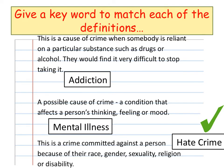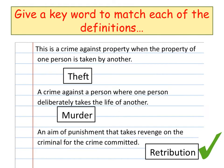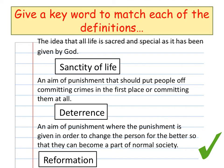A crime committed against a person because of their race, gender, sexuality, religion or disability is a hate crime. A crime against property when the property of one person is taken by another is theft. A crime against a person where one person deliberately takes the life of another is murder. An aim of punishment which takes revenge on the criminal for the crime committed is retribution. The idea that all life is sacred and special because it's been given by God is the sanctity of life.